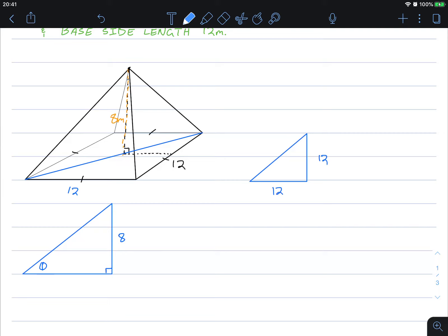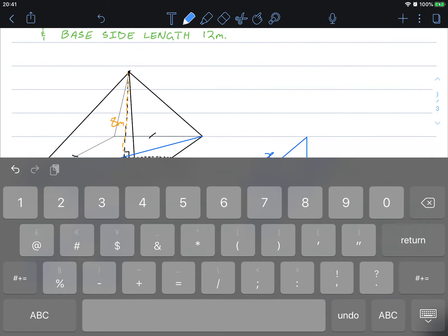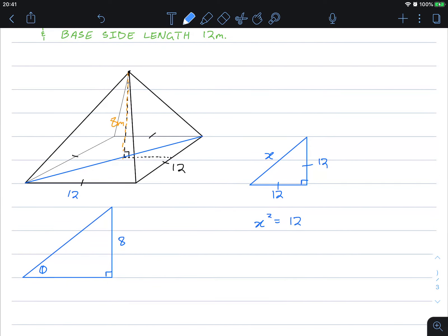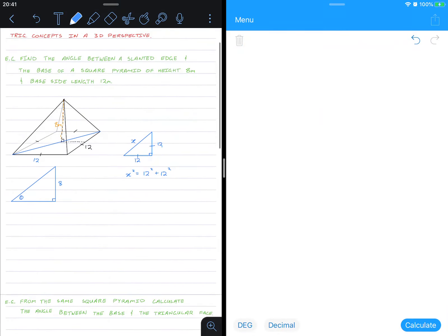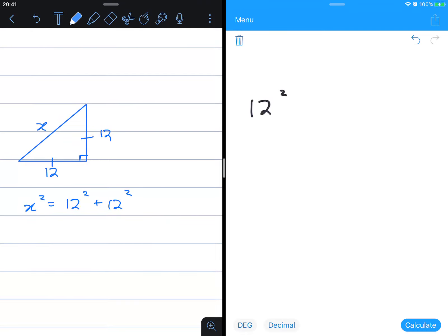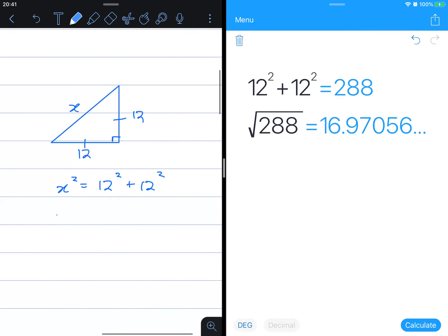This is 12. This is 12. That's 12. We're looking for this length here. It's x squared. x squared is equal to 12 squared plus 12 squared. That's 12 squared plus 12 squared. 288. I'm going to take the square root of 288. So x is equal to, I'm actually going to leave it as 288 there.